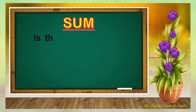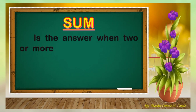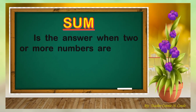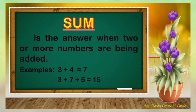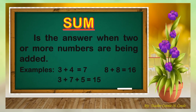Sum — the answer when 2 or more numbers are being added. Examples: 3 plus 4 is equal to 7, 3 plus 7 plus 5 is equal to 15, 8 plus 8 is equal to 16.